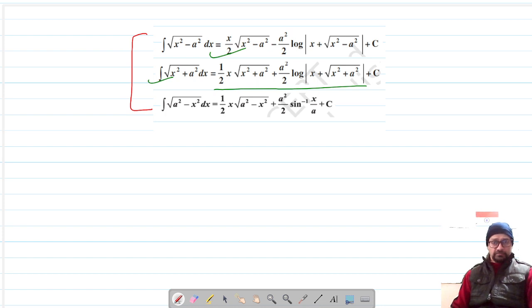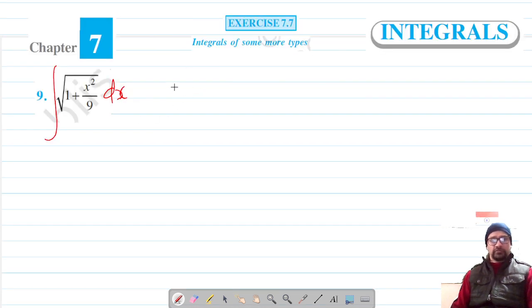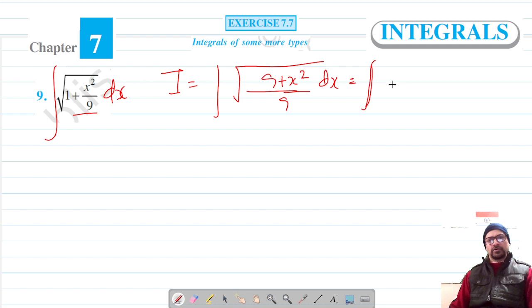Let's try to get it converted into one of these. So our integral is I, and let's take LCM. So it's 9 plus x squared into dx, which can be written as integration of the root of 9 plus x squared upon under root 9, where differential element is dx.